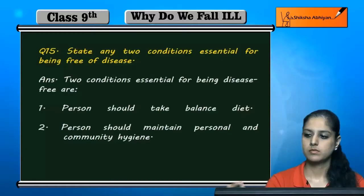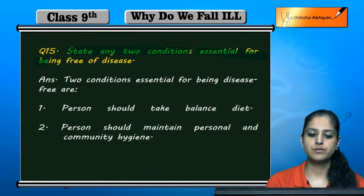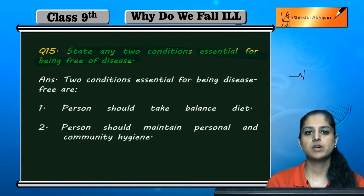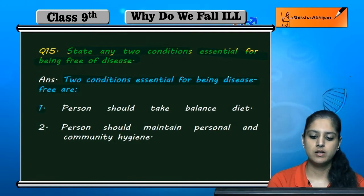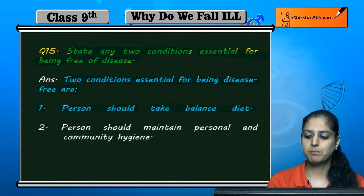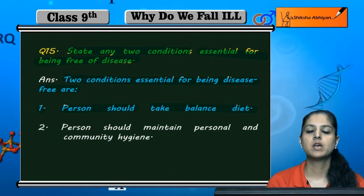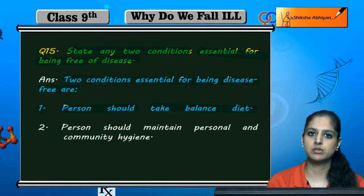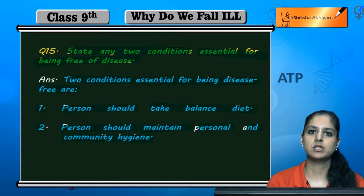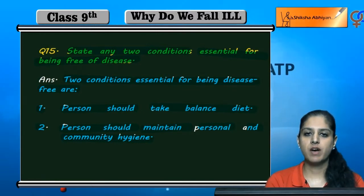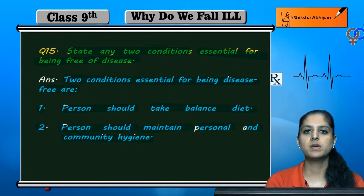Question number 15: State any two conditions essential for being disease-free. Two conditions that are essential for being disease-free are: first, a person should take a balanced diet — all the nutrients required for the body should be included. Second, a person should maintain personal and community hygiene, as well as a healthy social environment.